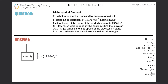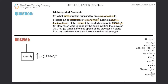Number 64 integrated concepts: what force must be supplied by an elevator cable to produce an acceleration of 0.8 meters per second squared against a 200 newton frictional force, if the mass of the loaded elevator is 1500 kilograms? The elevator is accelerating upwards, so the direction of travel is directly up — and that's important when dealing with frictional forces, since friction always opposes motion.